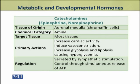The catecholamines also have an important role in metabolism. Epinephrine and norepinephrine are produced by the adrenal medulla, where chromaffin cells produce these hormones. These are amine hormones and they target most tissues of the body. Their primary actions include increasing cardiac activity, inducing vasoconstriction, and increasing glycolysis and lipolysis. As a result, they cause hyperglycemia.